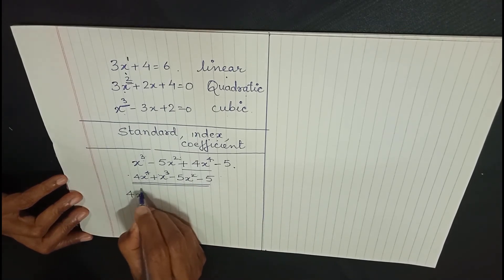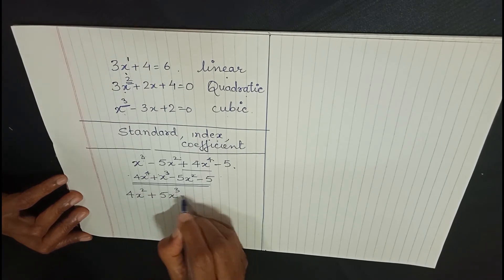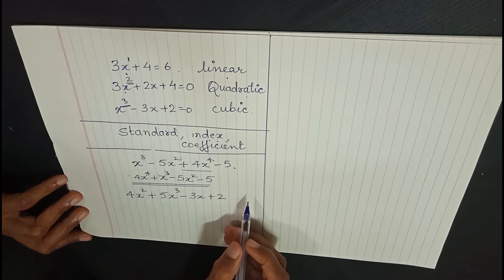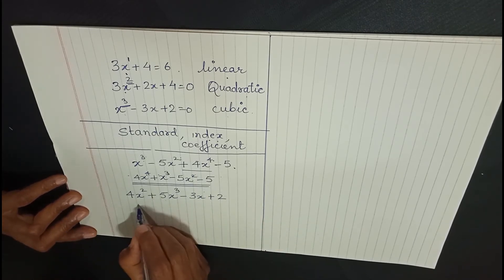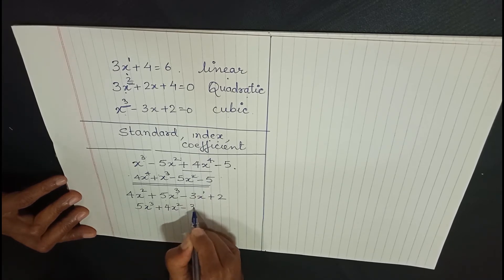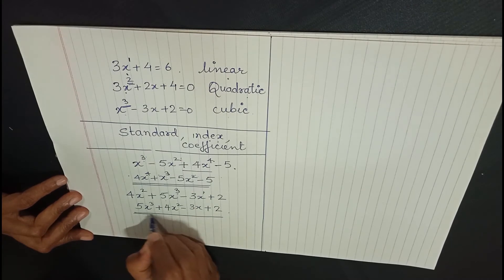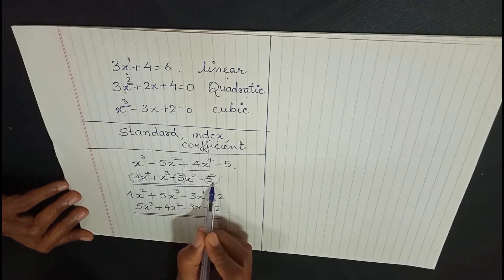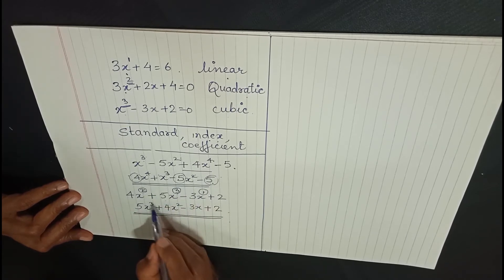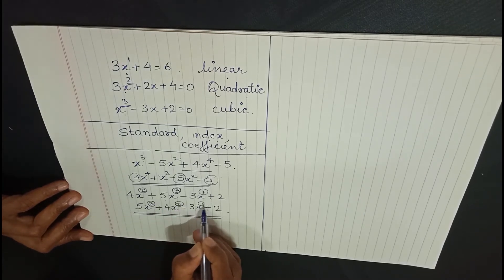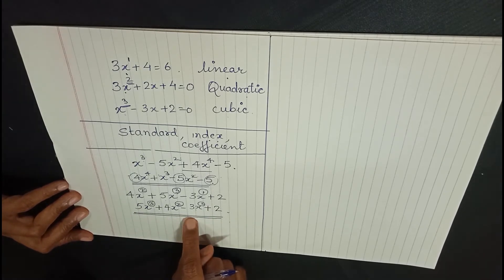Let us take one more example: 4x squared plus 5x cubed minus 3x plus 2. The degrees are 2, 3, 1 — not in order. We take the highest degree first: 5x cubed, then 4x squared, then minus 3x, and lastly plus 2. This becomes the standard form. Remember: we arrange the powers in decreasing order — 3, 2, 1, 0 — not the coefficients. The coefficients can be anything; it is always the degree that determines the arrangement.